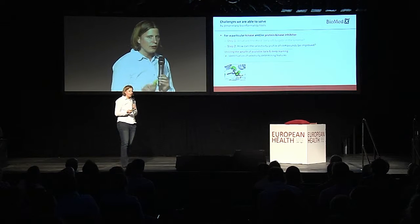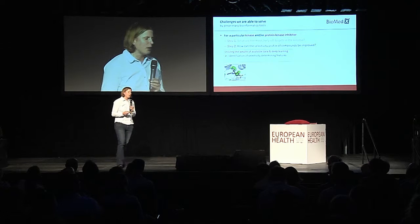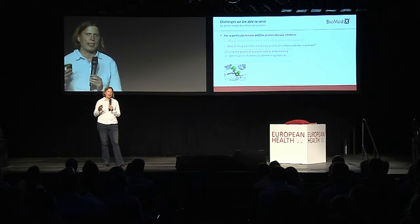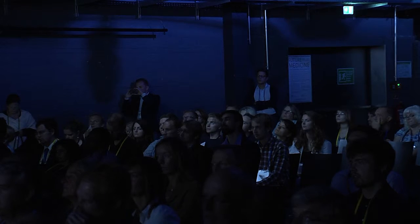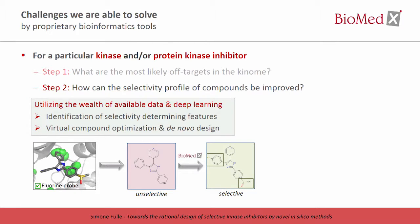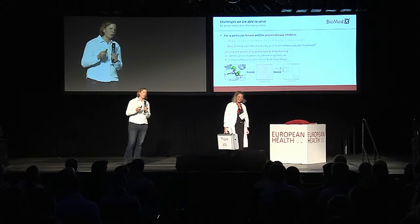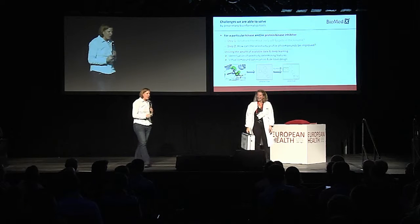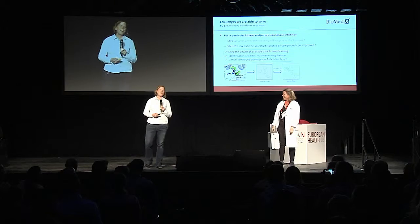By mining the available crystal structures, we are able to identify selectivity-determining areas — meaning in which areas you can achieve selectivity and by which chemical property. This information is then fed into a machine learning method like neural networks, allowing us to design new compounds with improved properties. So what you should remember from this talk is: if you are working on kinases or other targets with selectivity issues, you should get in touch with us.